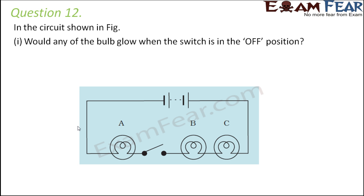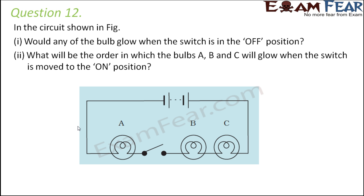None would glow. What will be the order in which the bulbs A, B, and C would glow when the switch is moved to the on position? The moment we switch it on, what happens? Current flows through the entire circuit. When current flows through the entire circuit, all the bulbs will be on simultaneously. All the bulbs would glow simultaneously.